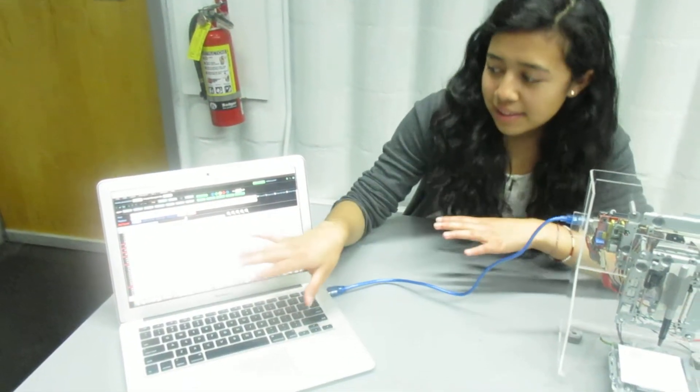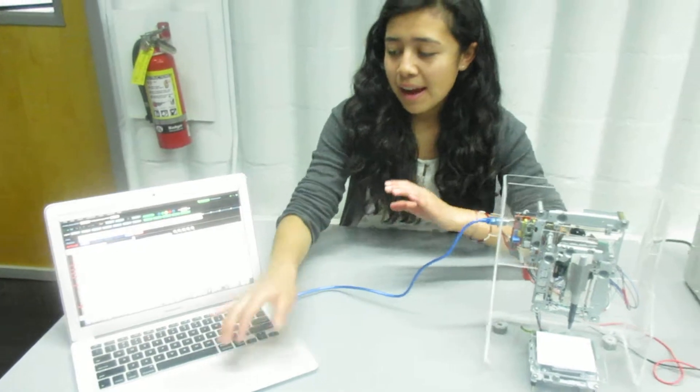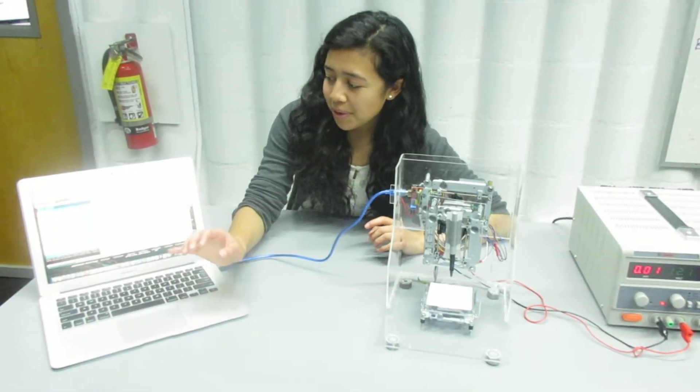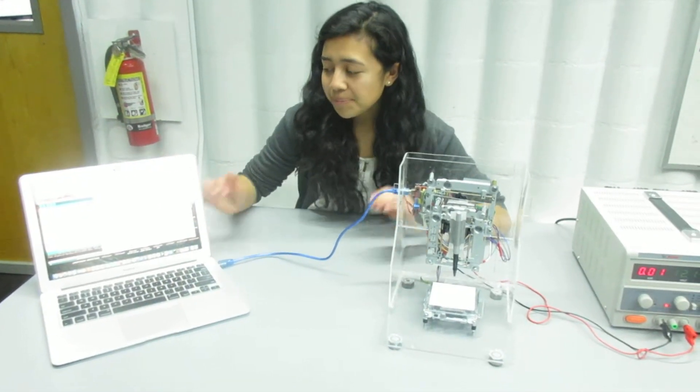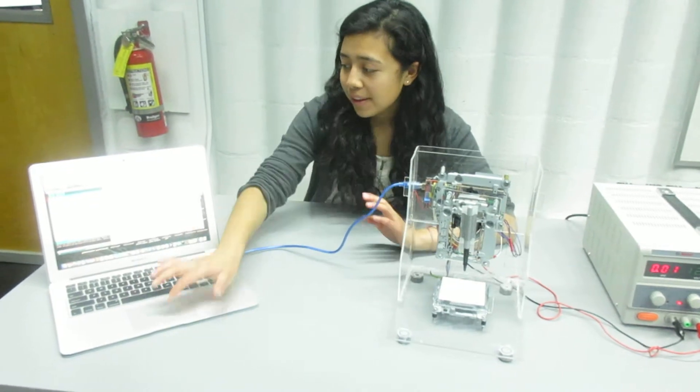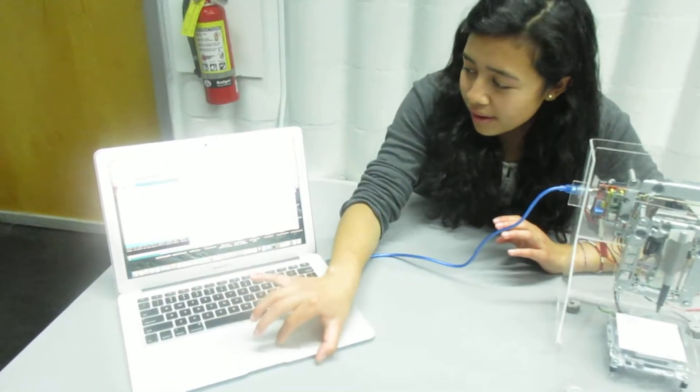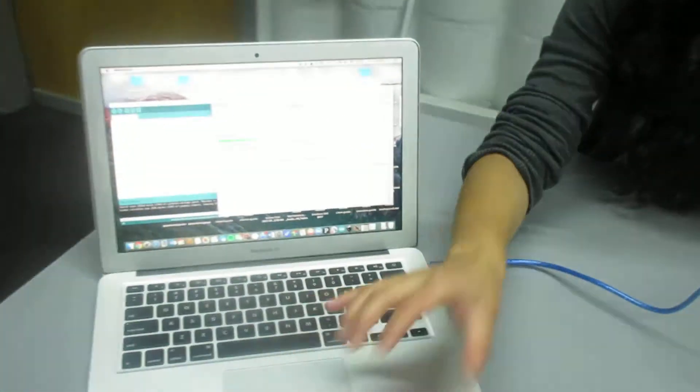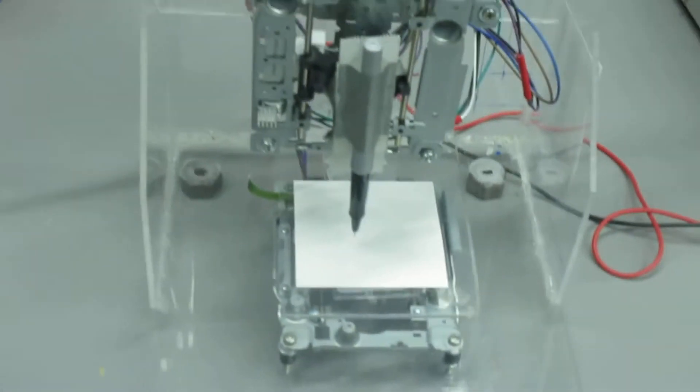Once I edit this file and there are no more errors, I save it and can then upload it using the Universal G-code Sender. Once here, I can click this Send button and my machine starts going.